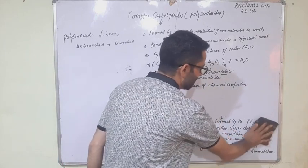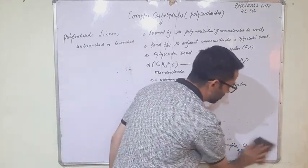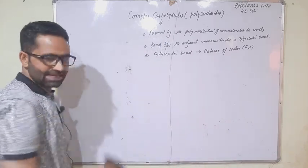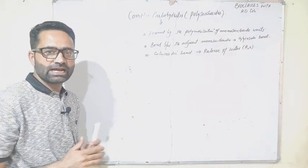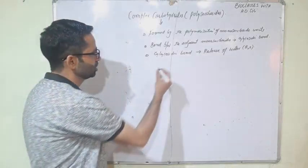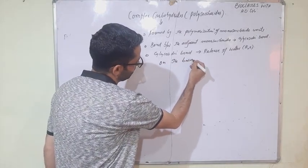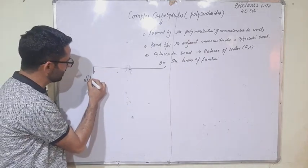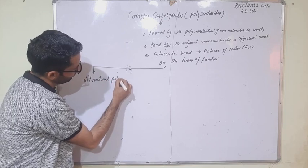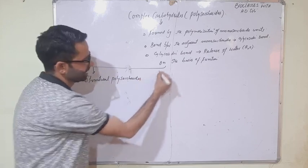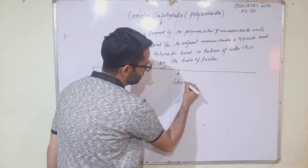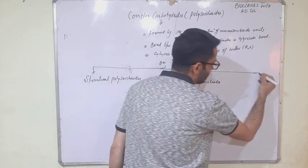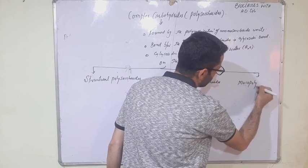Now on the basis of function, polysaccharides have been divided into three types. On the basis of function, there are three categories: the first one is called structural polysaccharides, the second one is called storage polysaccharides, and the third one is called mucopolysaccharides.